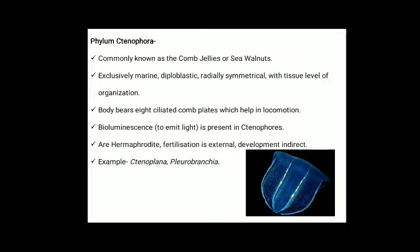Phylum Ctenophora: they are commonly called comb jellies or sea walnuts. They are completely marine, diploblastic, radially symmetrical with tissue level of organization. Body bears eight ciliated comb plates which help in locomotion. Bioluminescence, a phenomenon of emitting light, is present in ctenophores. They are hermaphrodites. Fertilization is external. Development is indirect. Example: Ctenoplana.